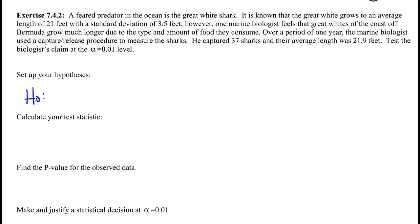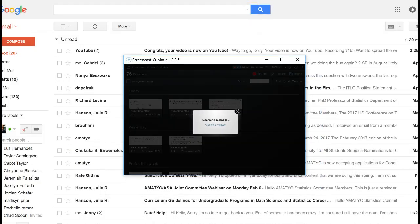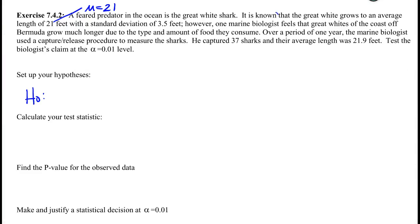If you did that, we have that it is known that the average length is 21, so this is a mu. It's the known value. And then the standard deviation that comes next, this must be a sigma. Nothing in that sentence tells me that that's from a sample, that it's an estimate, that we don't know the real value. Average and standard deviation, so these are the real deal values. However, one marine biologist feels that they grow much larger off the coast of Bermuda due to the amount and type of food they consume.